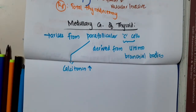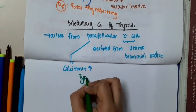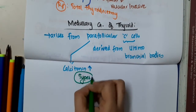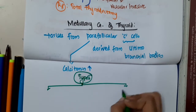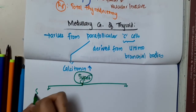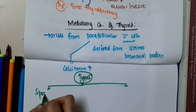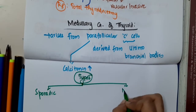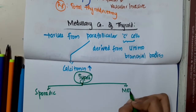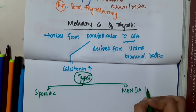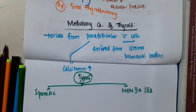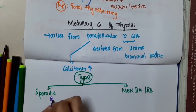There are two types of medullary carcinoma of thyroid. One, we have the sporadic type. Second, we have MEN2A or MEN2B type. In the sporadic type, it is seen in 80% of cases.